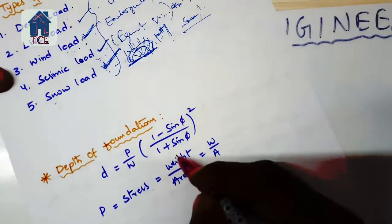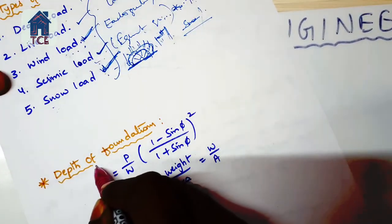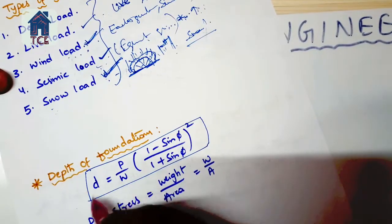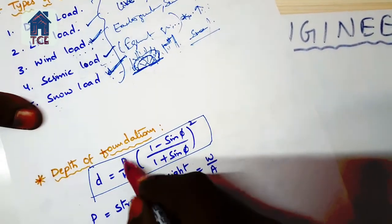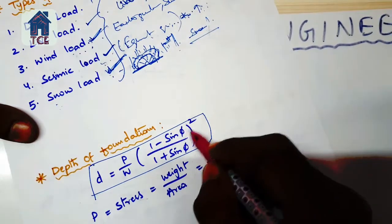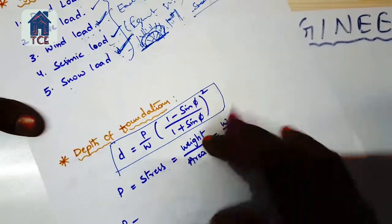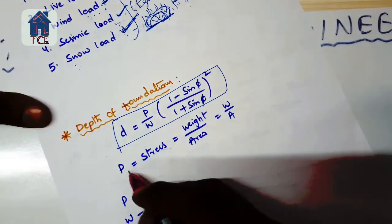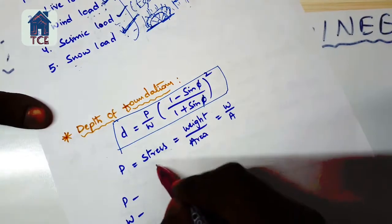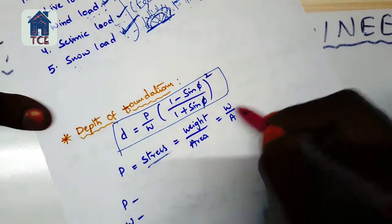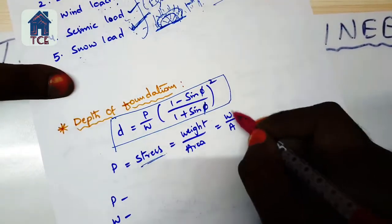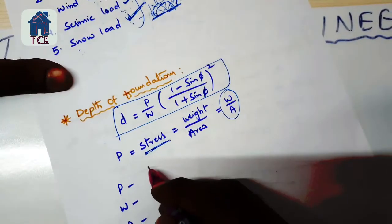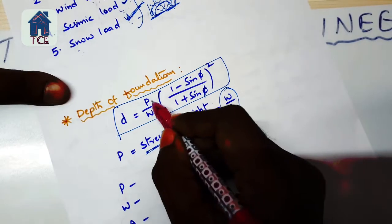The foundation depth is calculated based on load. The formula is: d = P/W × (1 - sin θ)². Here P is stress, which is weight by area (W/A) in normal form.